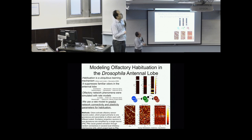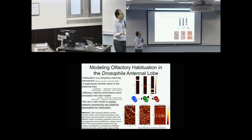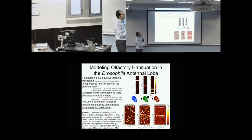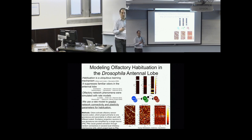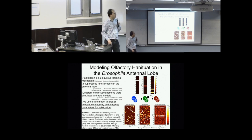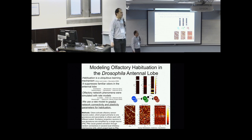Initially we have some activation for an odor — for example, odor number five is activated — which projects to a number of principal neurons and glomeruli, which then project to some local neurons. We will submit a second odor and look at habituation, similar to what has been done before.